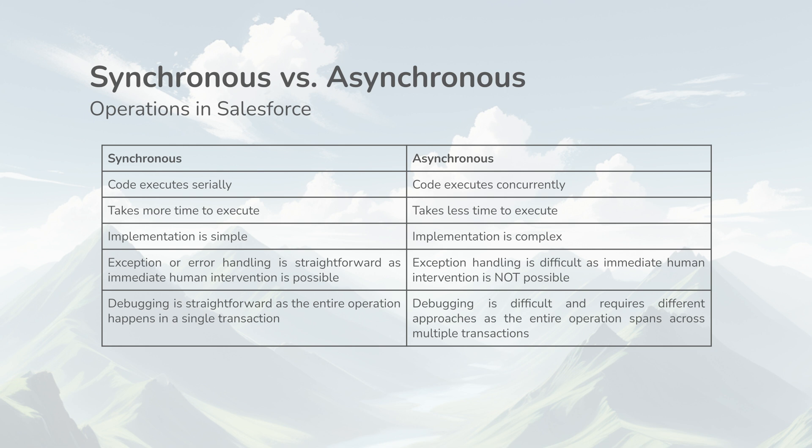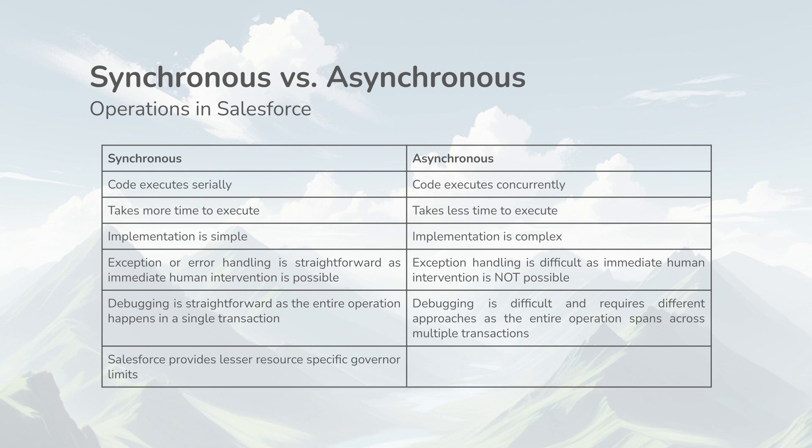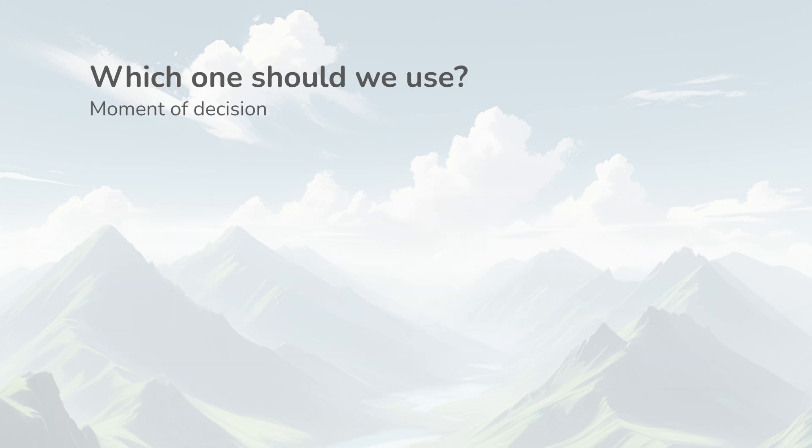Asynchronous Apex gets higher governor limits on resources like CPU time and heap memory, which allows it to be used for more resource-intensive operations like mass data updates or performing complex computations. Synchronous Apex, on the other hand, has lesser governor limits for these resources, making it not suitable for operations that take more time and resources.